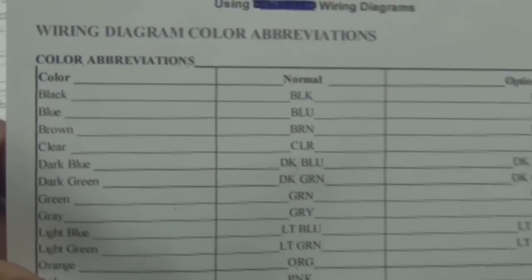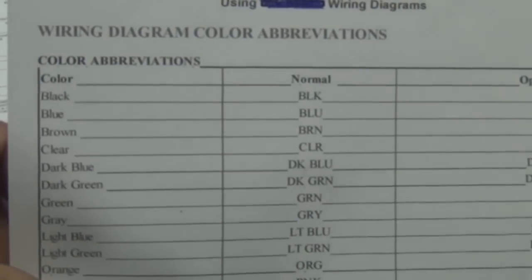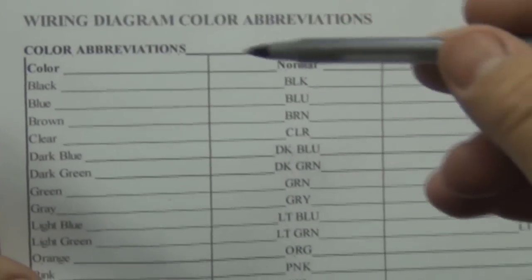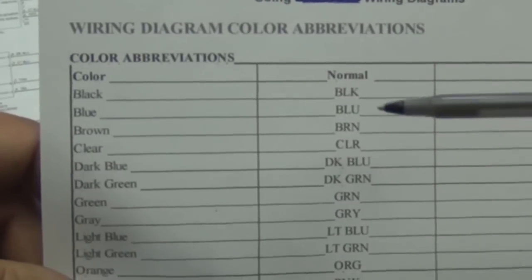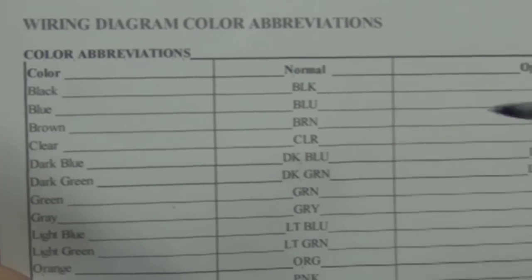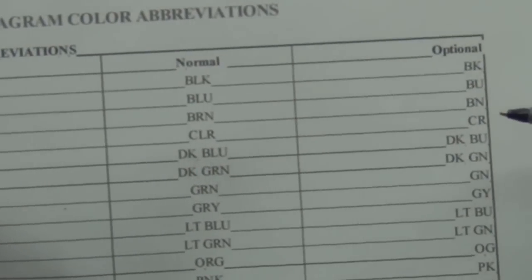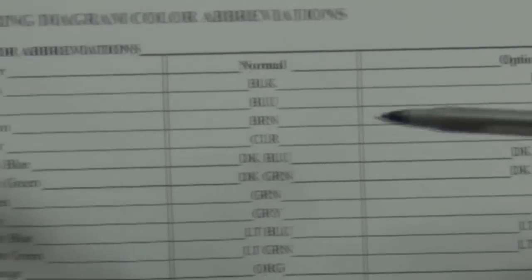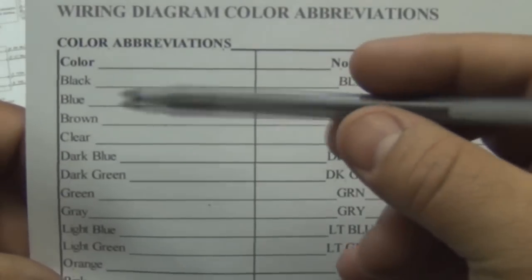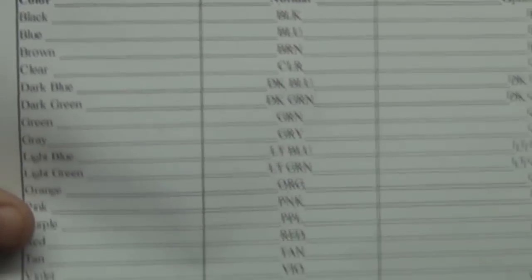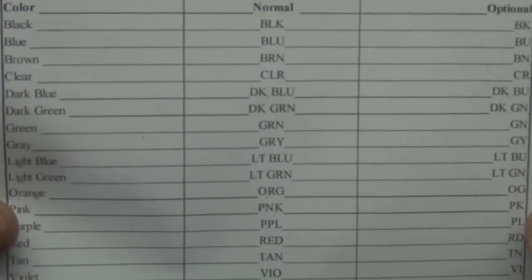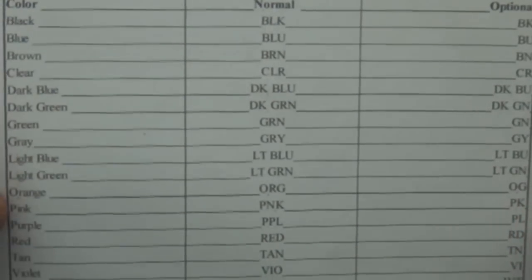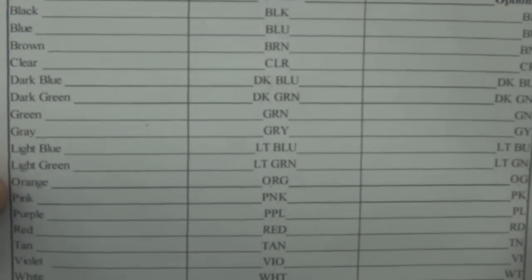Here are the wiring diagram abbreviations: black is BLK or BK, blue is BLU or BU, and so on. I'll put this on the screen — you can pause it and go over it if you like.